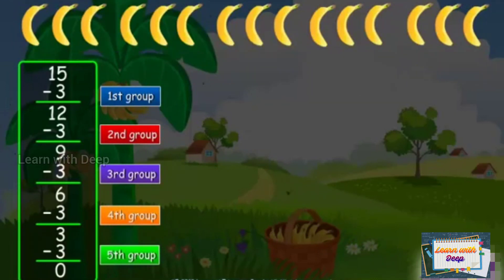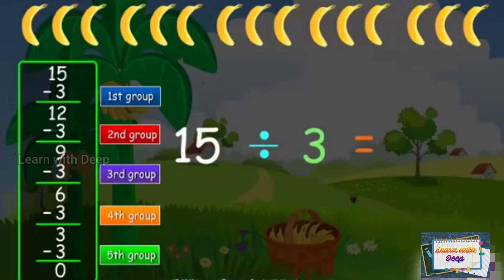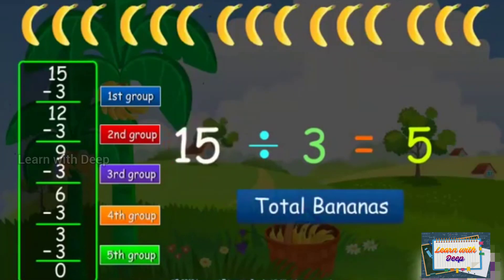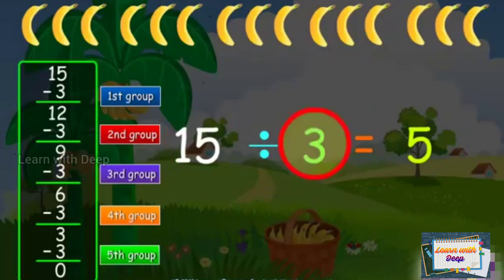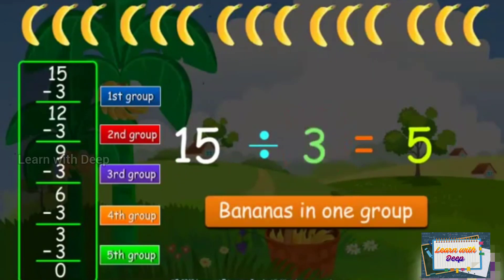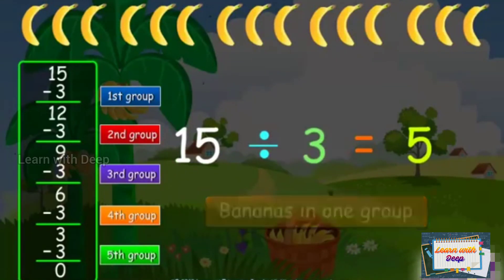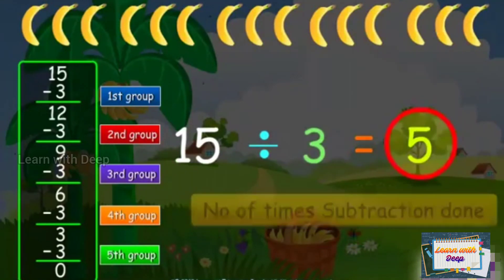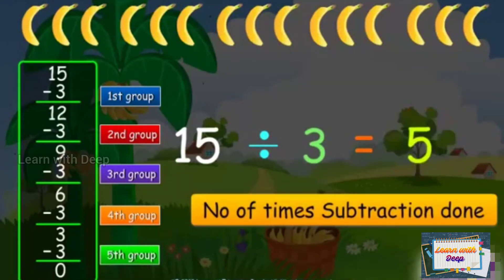We can write 15 divided by 3 is 5. 15 is the total bananas. 3 is the bananas in one group. 5 is the number of times subtraction was done.